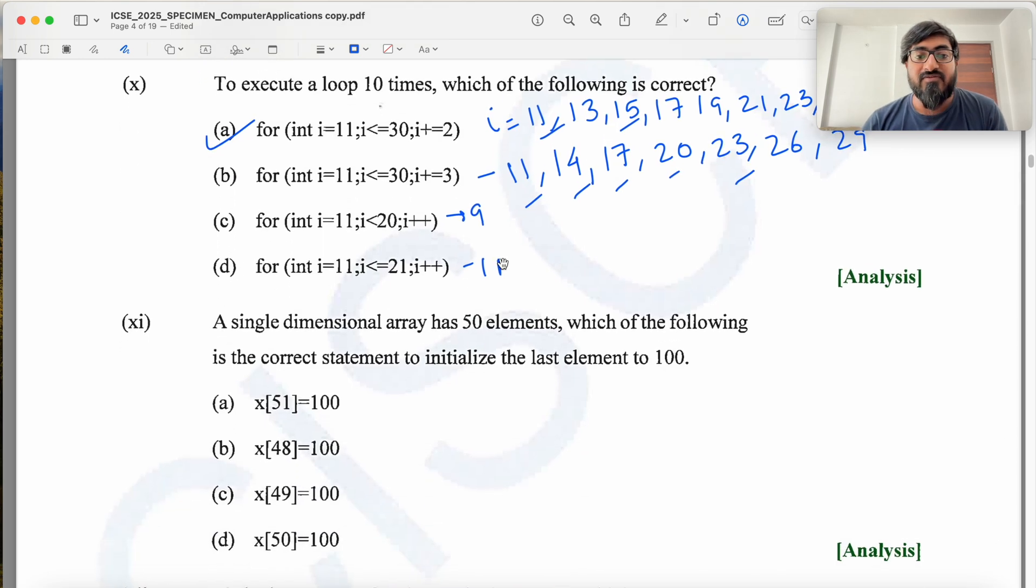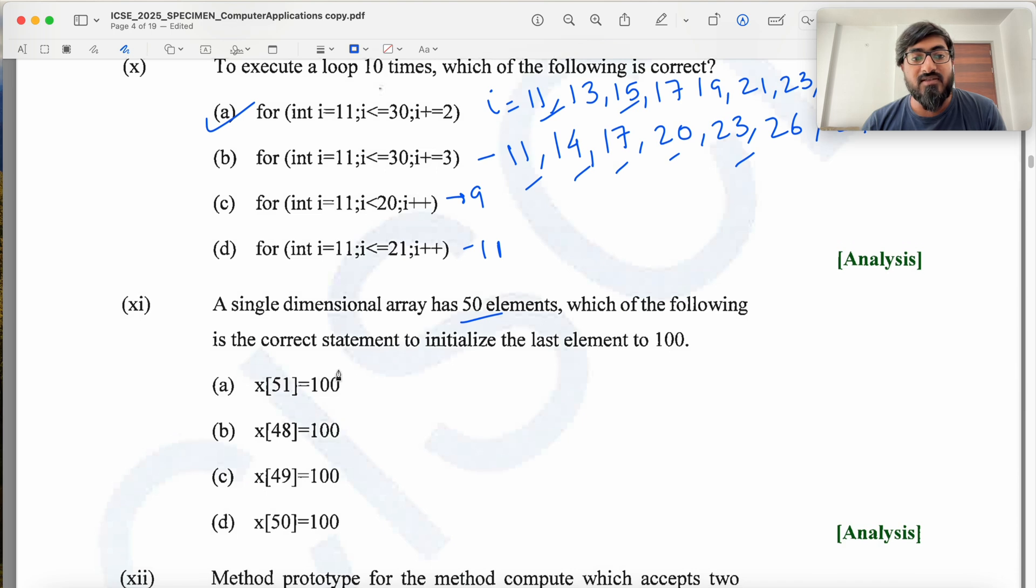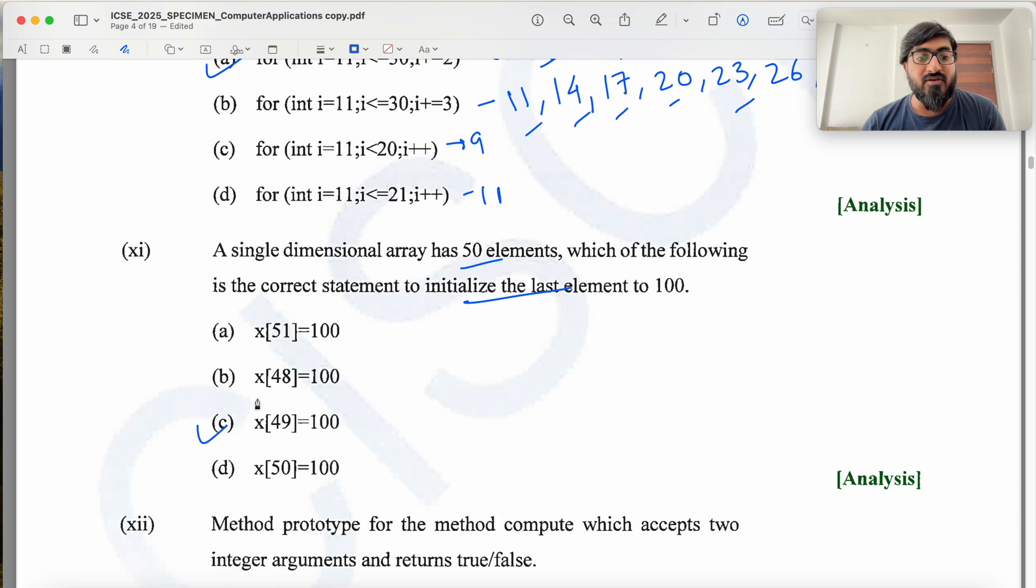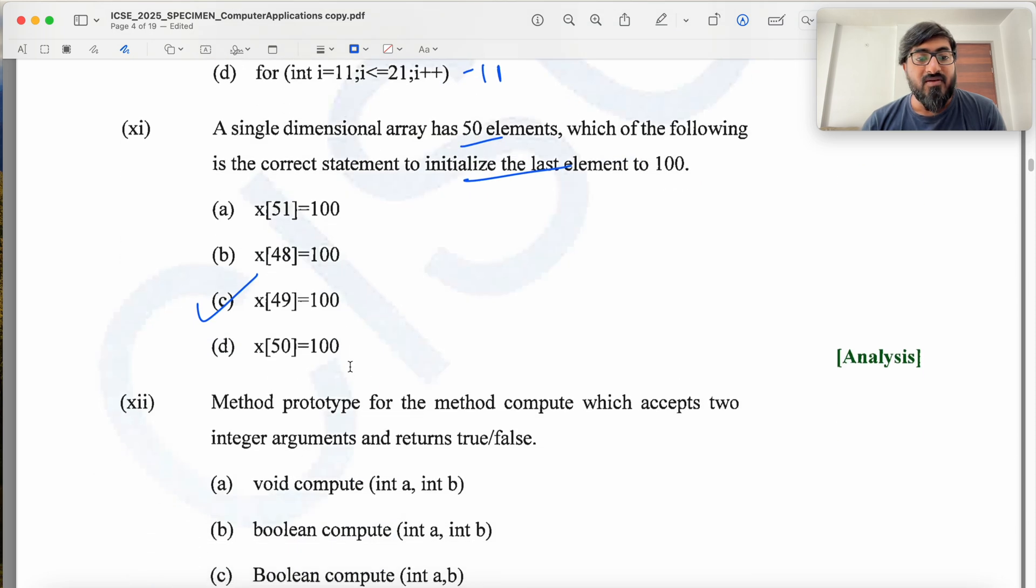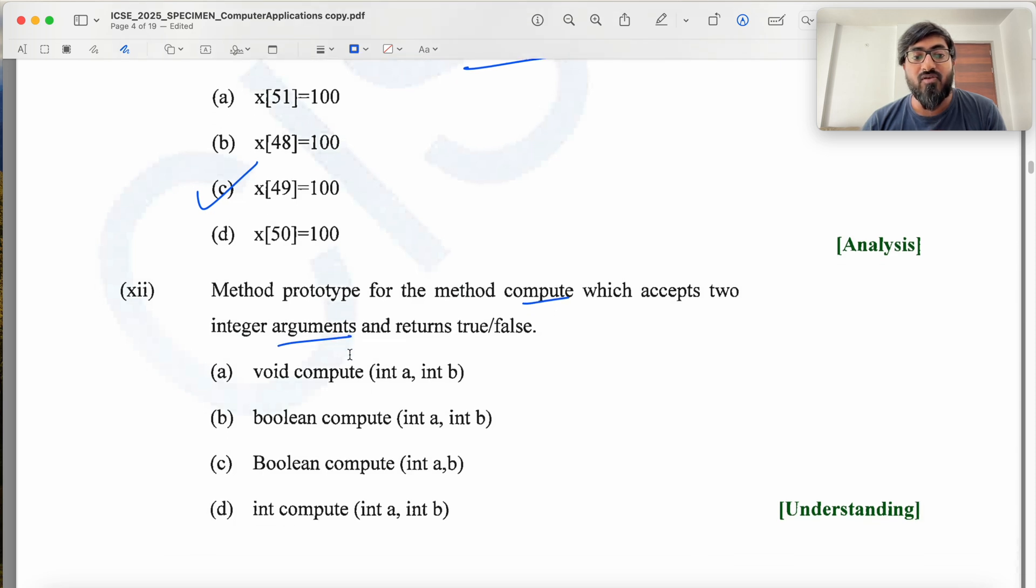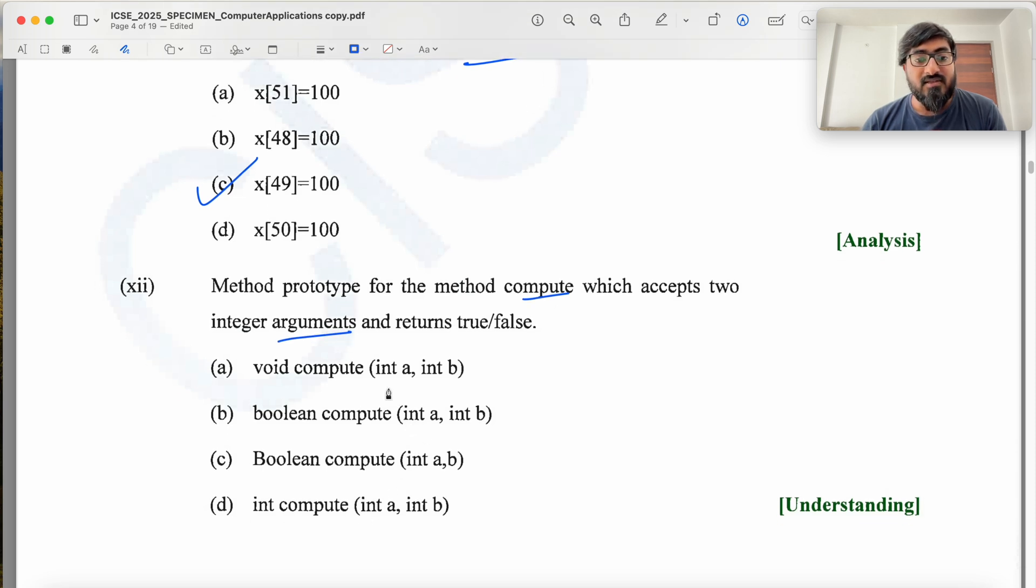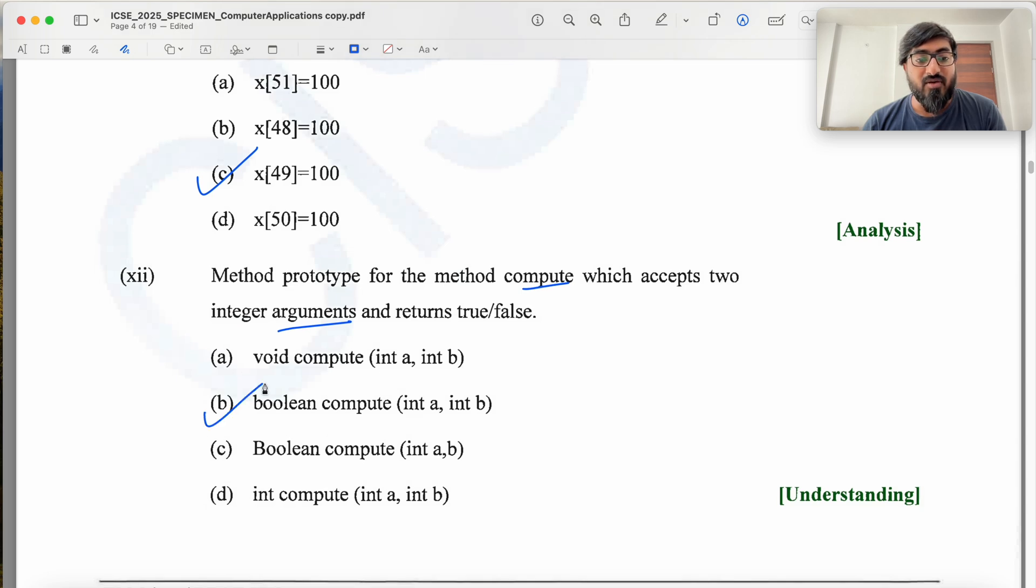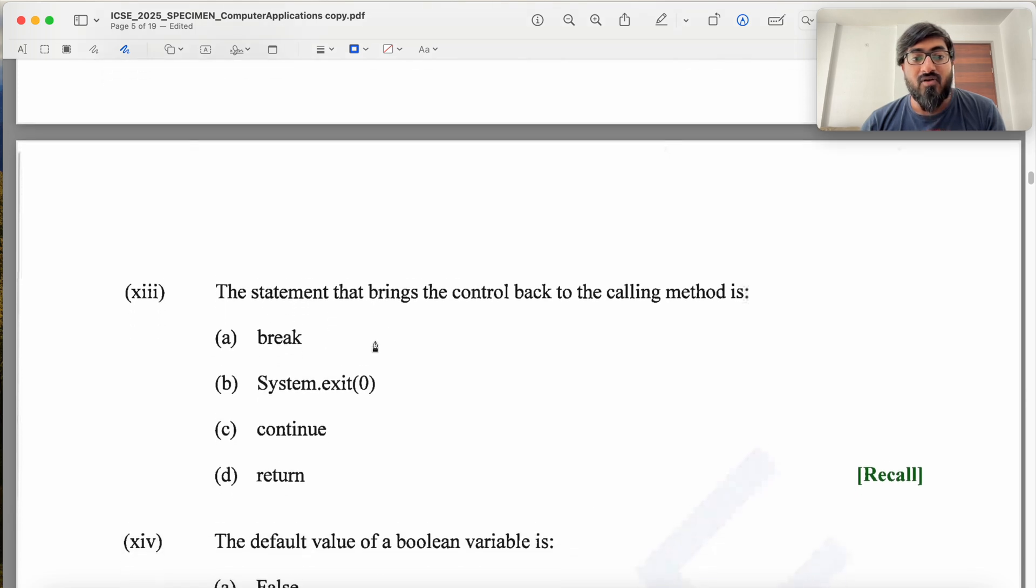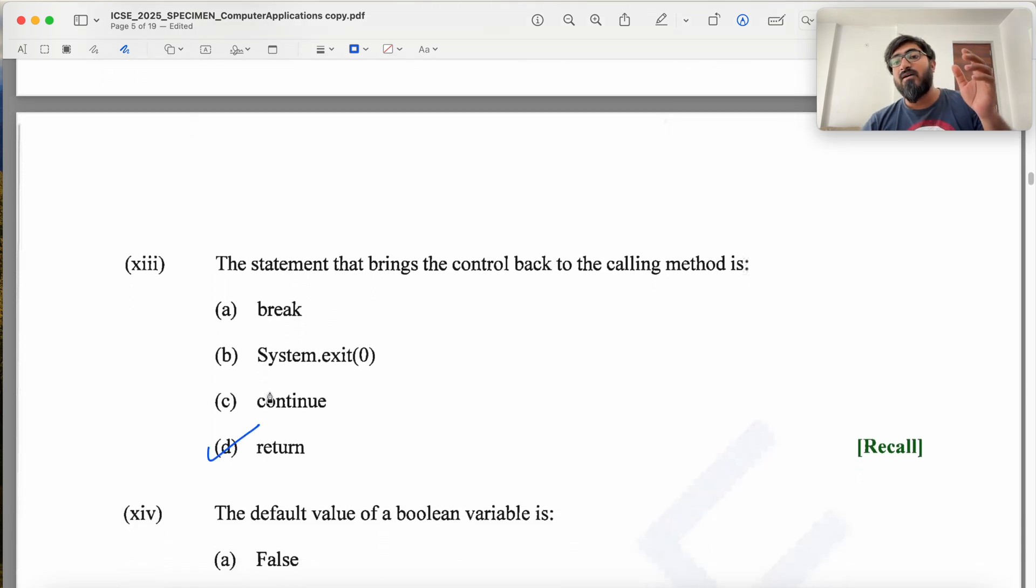A single dimensional array has 50 elements, this is 0 to 49. Which of the following will initialize the last element to 100. So last element will be at index length minus 1. So this is going to be our answer. Method prototype for a method compute which accepts two integer arguments and returns true or false is a Boolean type. So this is going to be our answer. Control back to the calling method is return.